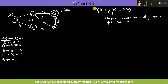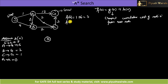Now let's solve this example using A*. We start at S. From S I can go to A or to B. We select the node with the lowest f(n) value. f(A) = g(A) + h(A) = 1 + 6 = 7. f(B) = g(B) + h(B) = 4 + 2 = 6. Since f(B)=6 is lowest, I will go to B.